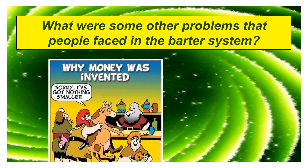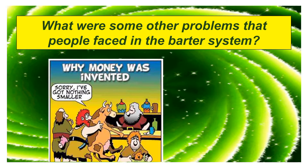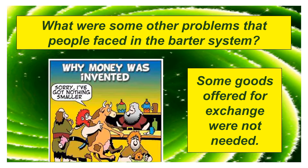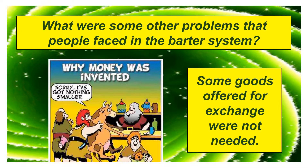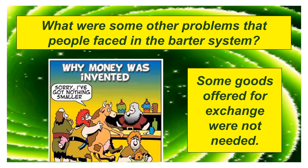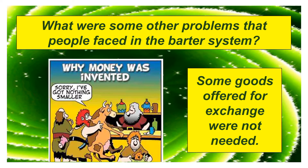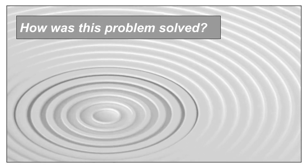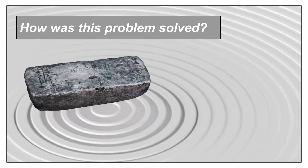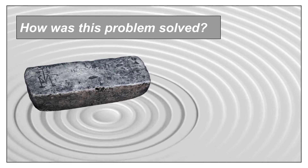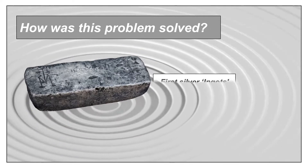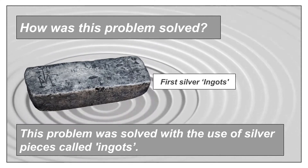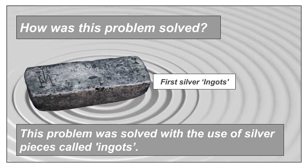The other problem was that sometimes people were offered things they did not need — we needed something else, but the other person was offering things we didn't want. Every problem has a solution. This problem was solved with the use of silver pieces called ingots to buy things. You can see this picture, and the same picture is given in your content book. Ingots were easier to carry and allowed people to buy anything they wanted.